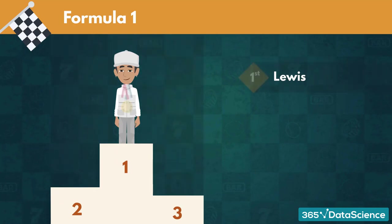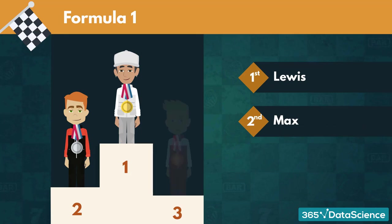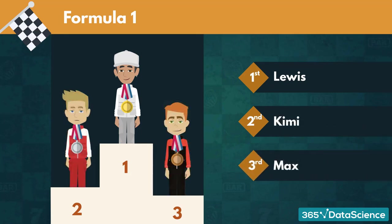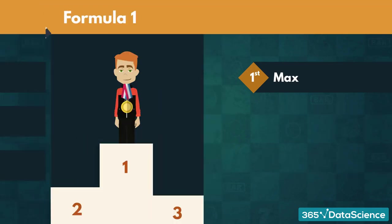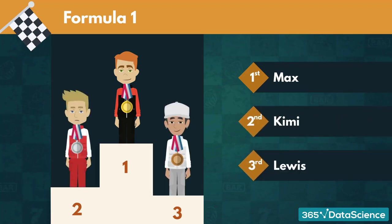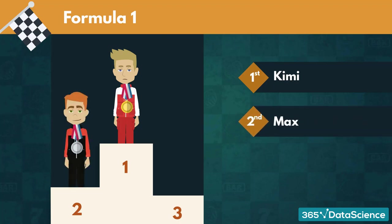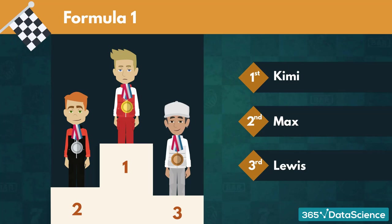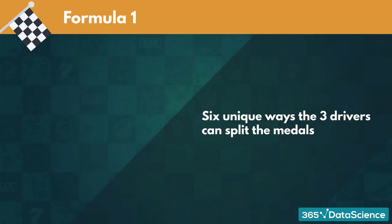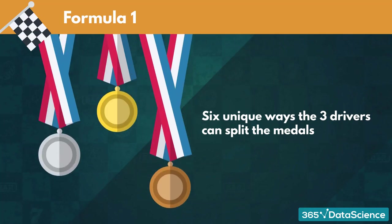Suppose Lewis won the race. Then we have two possible scenarios: Max finished 2nd and Kimi finished 3rd, or Kimi finished 2nd and Max finished 3rd. Now, suppose that Max won. Once again, we have two possible outcomes, but this time it is Lewis and Kimi who have to split the silver and bronze medals. Similarly, if Kimi won the race, we would have two more ways the drivers can be arranged on the podium. In total, this leaves us with six unique ways these three drivers can split the top three spots. We call these six ways permutations.